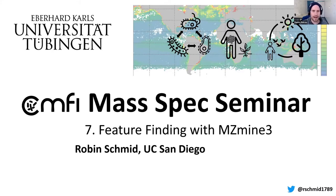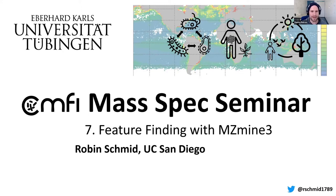Before he gets started, a little introduction: Robin did his bachelor's and master's in food chemistry at the University of Münster, where he then also did his PhD in the group of Overcast. During his PhD, which was mainly wet-lab focused, it became clear he has quite some interest in software development. He became part of the MZmine developing team, spent a couple of months visiting in San Diego where he developed the basis for ion identity molecular networking, and has since become the main developer of MZmine 3. He is now also a postdoc in the lab of Peter Dörstein. Welcome Robin!